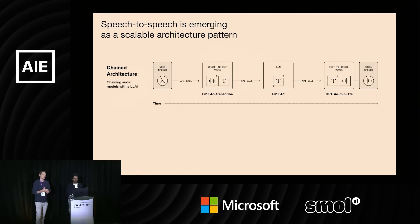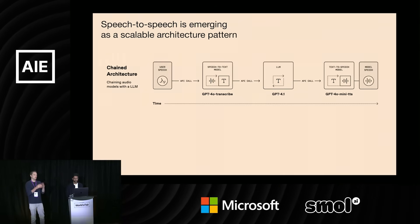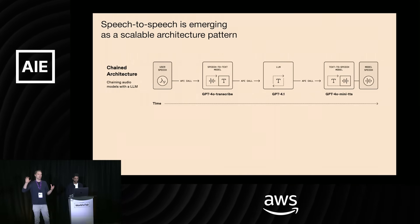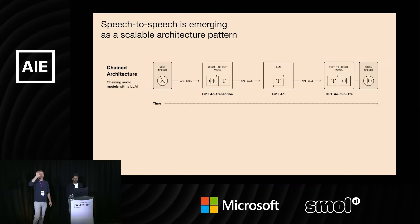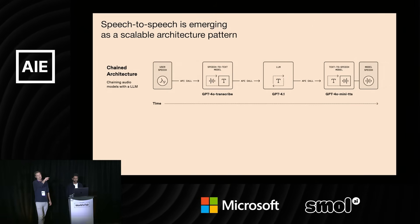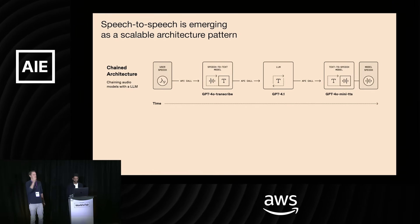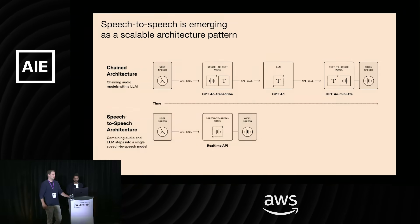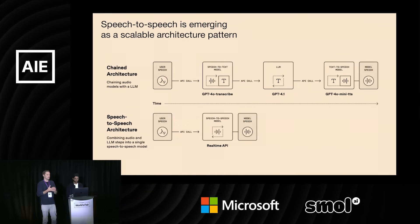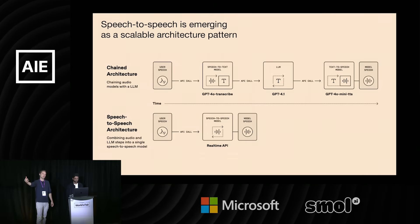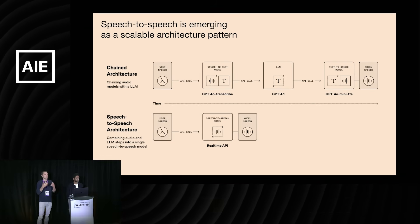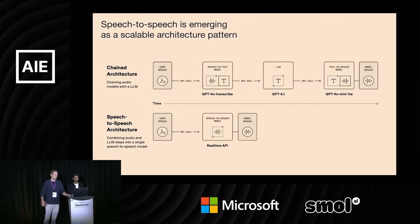In terms of actually building on top of the audio models, there are really two emerging architectures we see. The existing one has been what we call the chained approach: audio comes in, you transcribe it, you have some sort of intelligence layer with an LLM, and then finally text-to-speech on the output. But this is stitching together three models — it's slow, takes longer to generate output audio, and has some lossiness where you lose a little semantic understanding. The emerging pattern is the speech-to-speech architecture, which takes those three models into a single model — for us, that's the real-time API. It does the transcription, the intelligence layer, and speech output. This simplifies the architecture dramatically, reduces output latency, is really good for low-latency experiences, and maintains semantic understanding across a conversation.